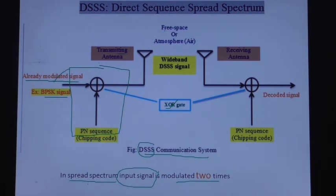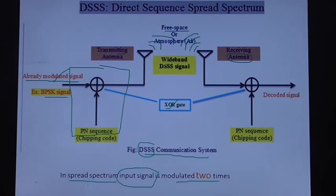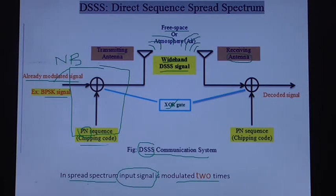The transmitting antenna interfaces with free space — the antenna is used to transmit and receive radio signals, acting as an interface between the transmitter and free space. The second-time modulated signal is a wideband DSSS signal. Note that the effect of modulation increases the bandwidth of the signal — the narrow band signal is converted to a wide band signal by combining with the PN sequence. The PN sequence is also called the chipping code.